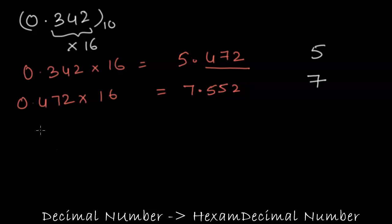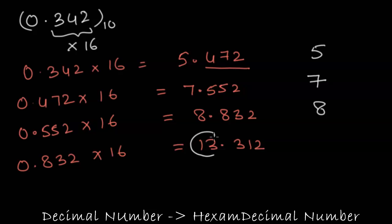Again we have 0.552 into 16. This gives us 8.832. The number interested is 8. Moving forward we have 0.832 into 16 is 13.312. Now 13 is what we are interested in but 13 is not a hexadecimal number and to convert 13 into hexadecimal number it is D.